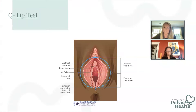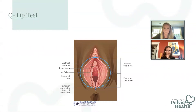Generally, the findings for the Q-tip test are: if there's any tenderness or hypersensitivity along that posterior fourchette or between about four and eight o'clock, then there's a pelvic floor muscle component, and it's almost always a tightness issue that you're working with.